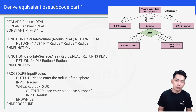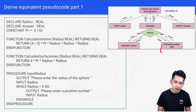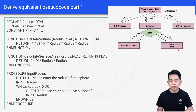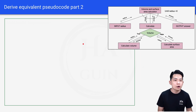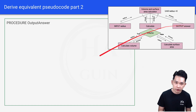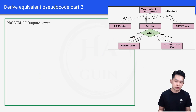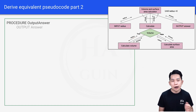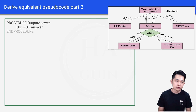So in part 1, we've done the Input Radius module, Calculate Volume, Calculate Surface Area, as well as declaring the variables. Now let's look at part 2. PROCEDURE outputAnswer — this just outputs answer and ends the procedure.